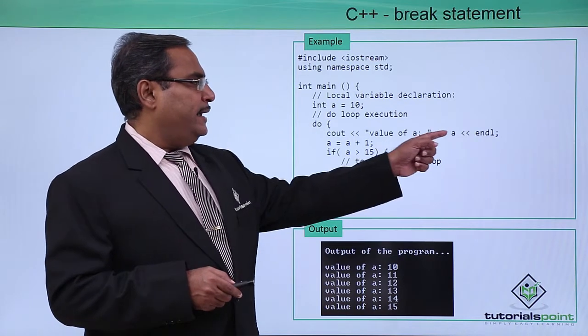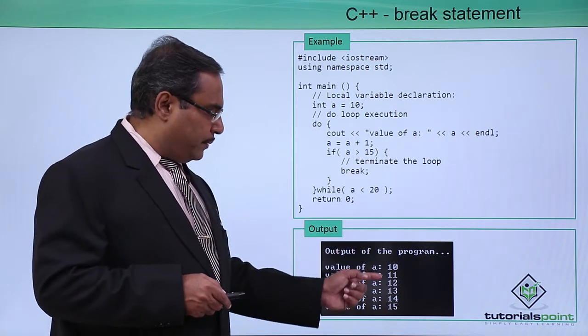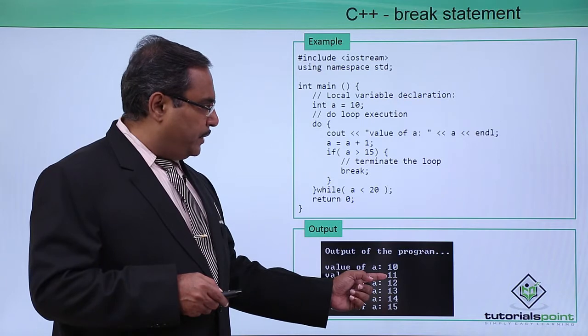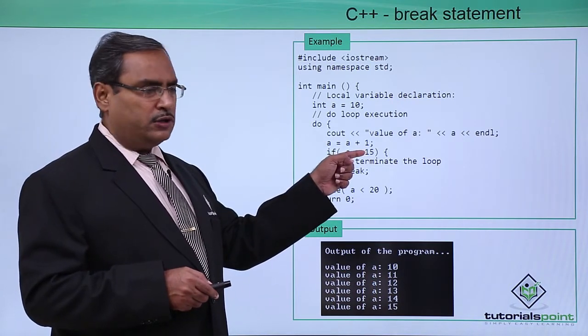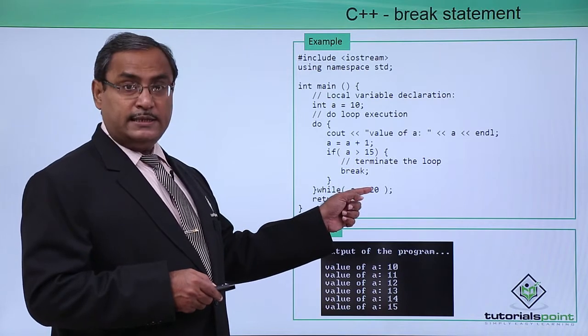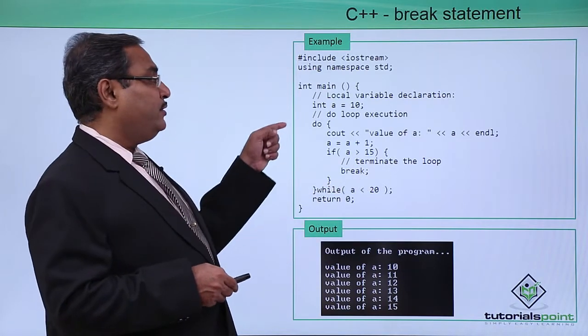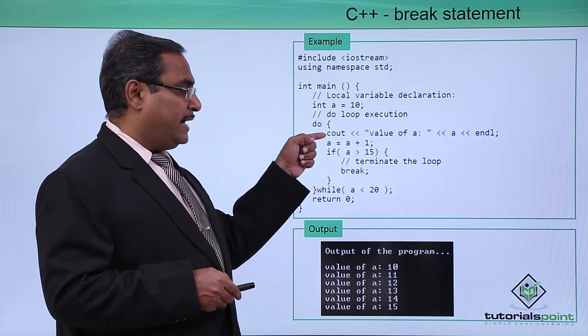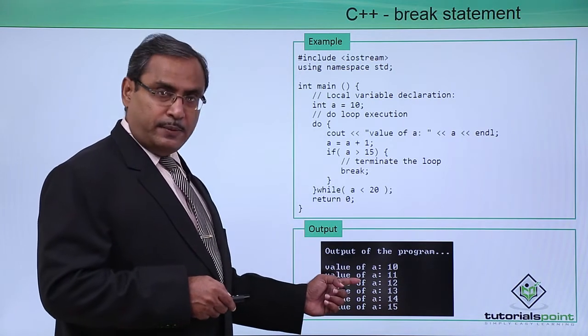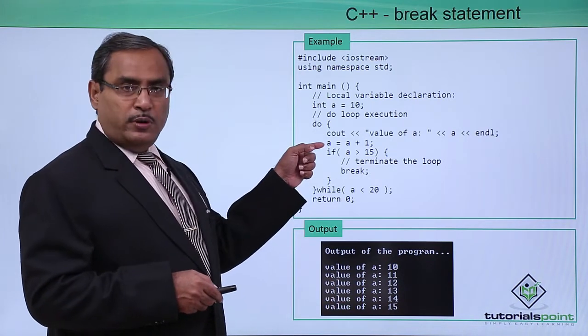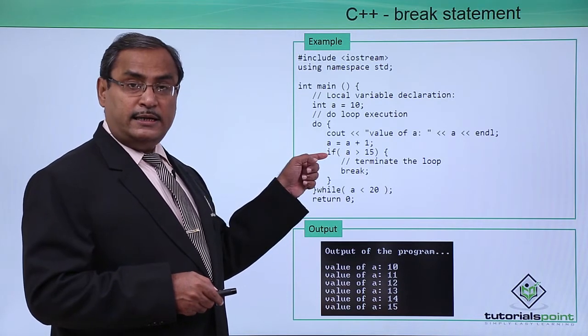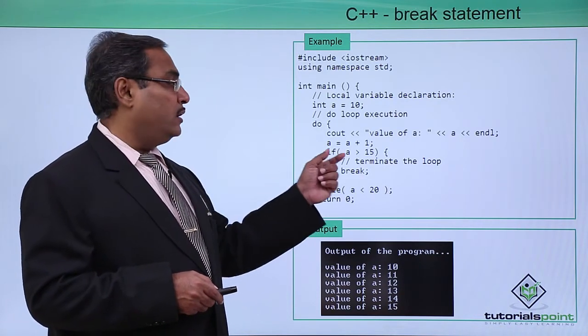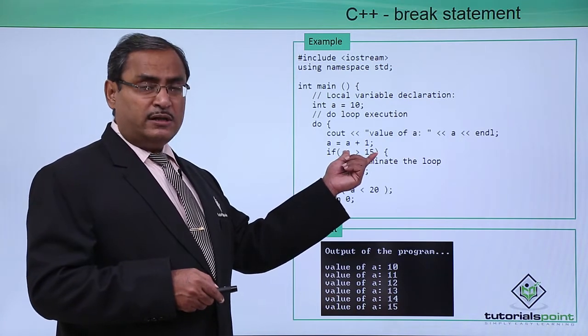Again, it will go on executing, 11 will get printed. 11 will become 12, 12 greater than 15 is false, 12 less than 20 is true. That is why again it will go for execution. Value of a as 12 will get printed as we have done here, then 12 will become 13 after incrementing it by 1 and then 13 is greater than 15, this particular condition will become false in that case.